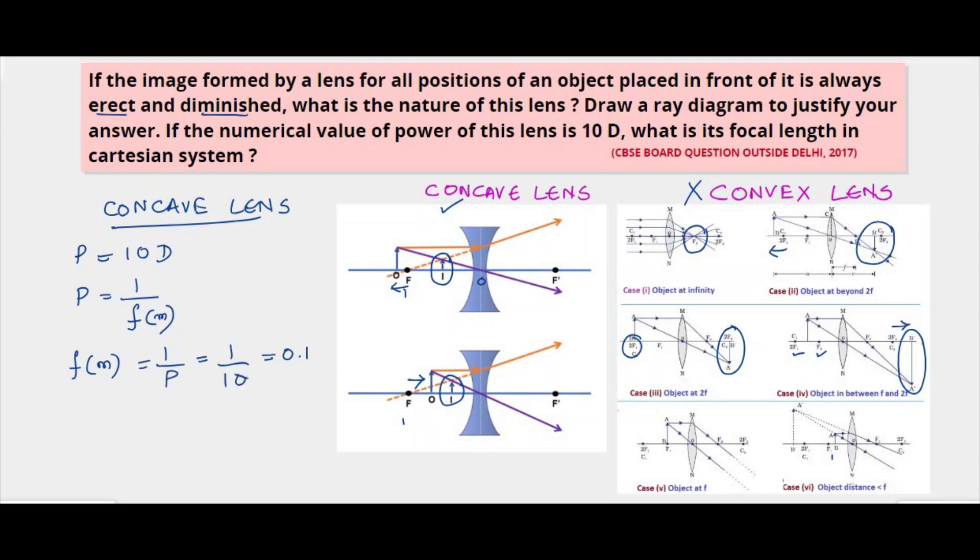We know that focal length is always expressed in centimeters, so we have to convert this into centimeters. So focal length is 10 centimeters. Now we know that the concave lens has a negative focal length, so we have to write - because it's asked to write in proper Cartesian system - F is equal to minus 10 centimeters.